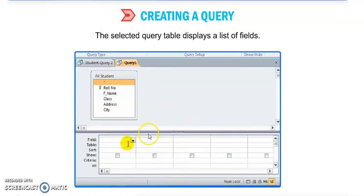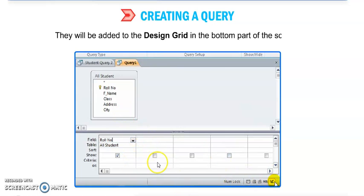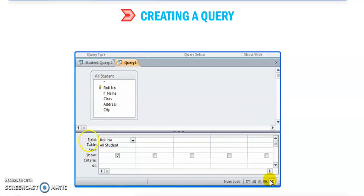Now, the selected query table displays as a list of fields. Double-click on that field name if you would like to add it in a query. Whatever field you want to add in a query you can double-click on it or you can drag it also. They will be added to the design grid in the bottom part of the screen. You can see this is the design grid window. In this you can add the suitable fields for you.